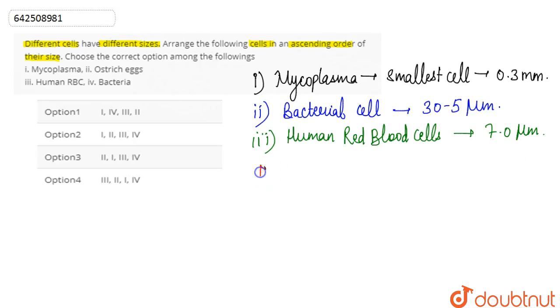And lastly, the greatest of all or the greatest in size is the ostrich, right? That's the ostrich egg. That's the largest cell. It is the largest cell with the size of 15 by 13 cm, right?